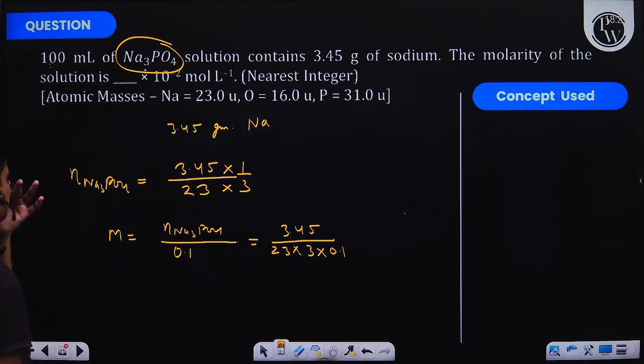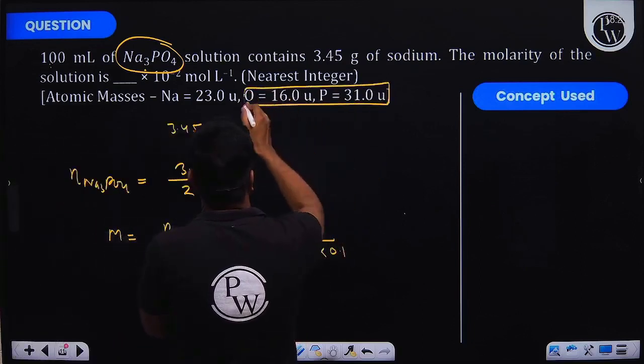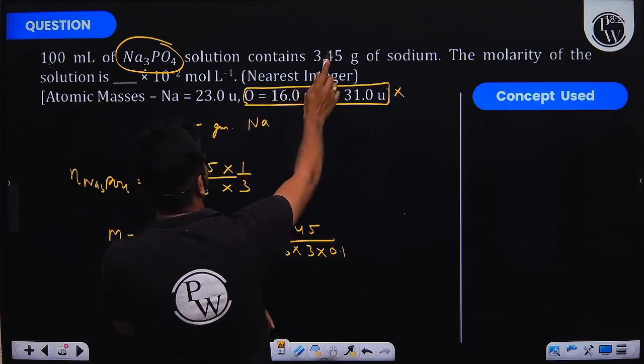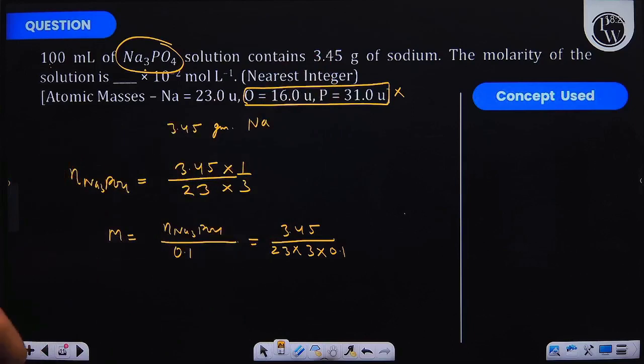So you do not need to use the masses of the phosphorus and oxygen given here. What you would do is convert this mass of sodium into moles of sodium and multiply it by 1/3 to get the moles of Na₃PO₄.